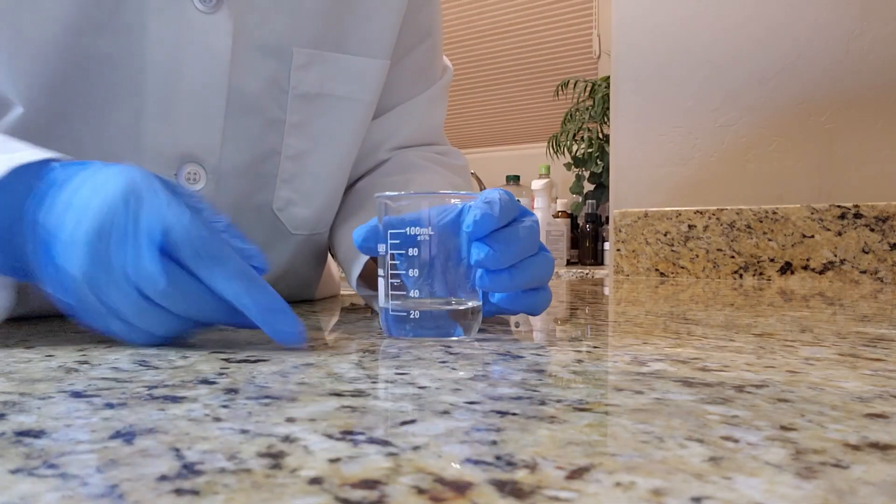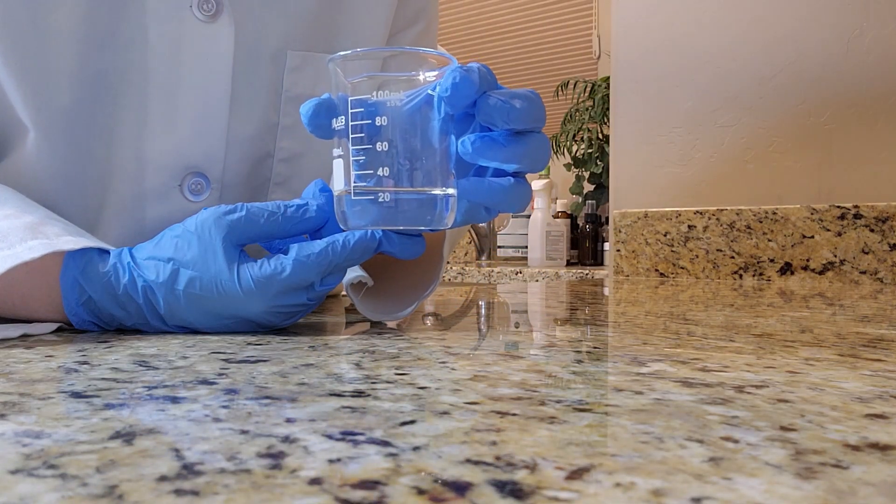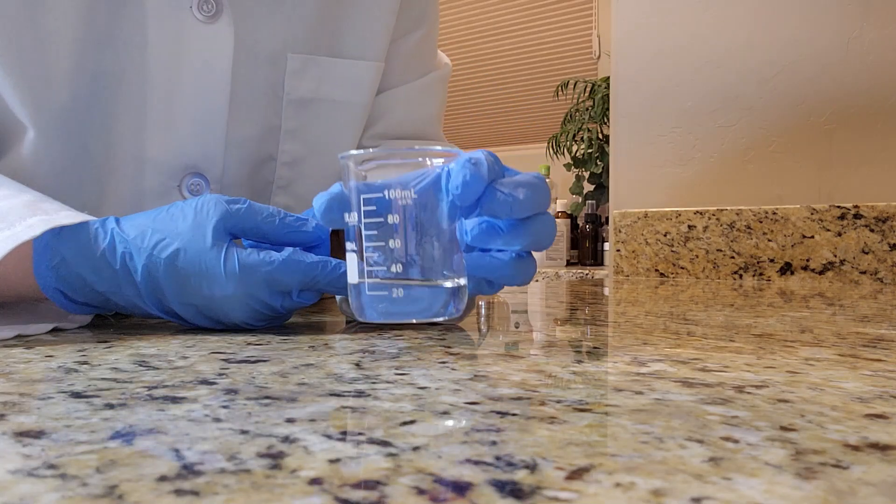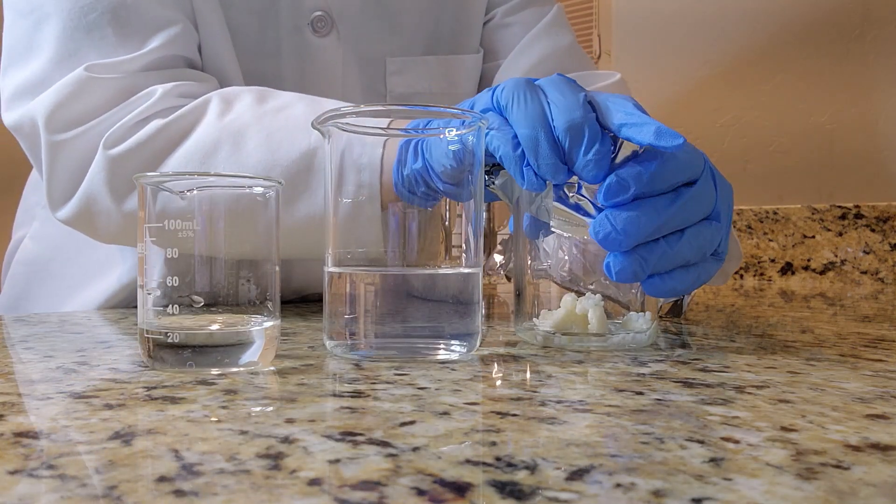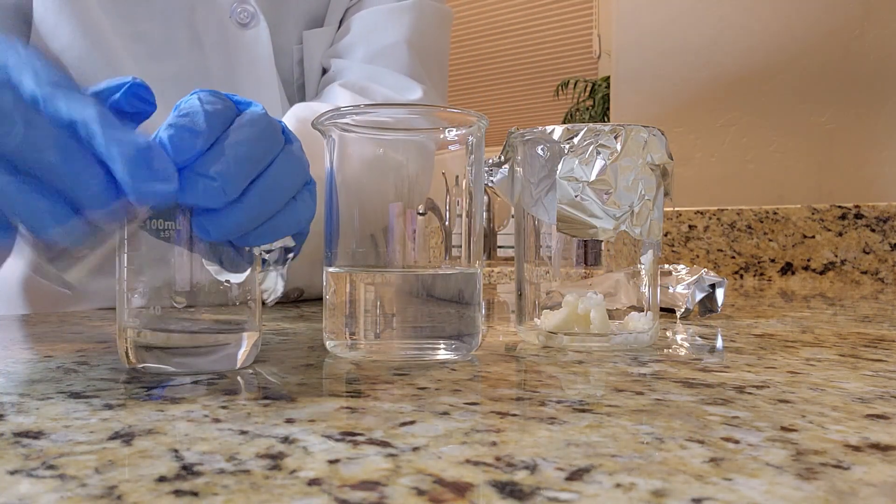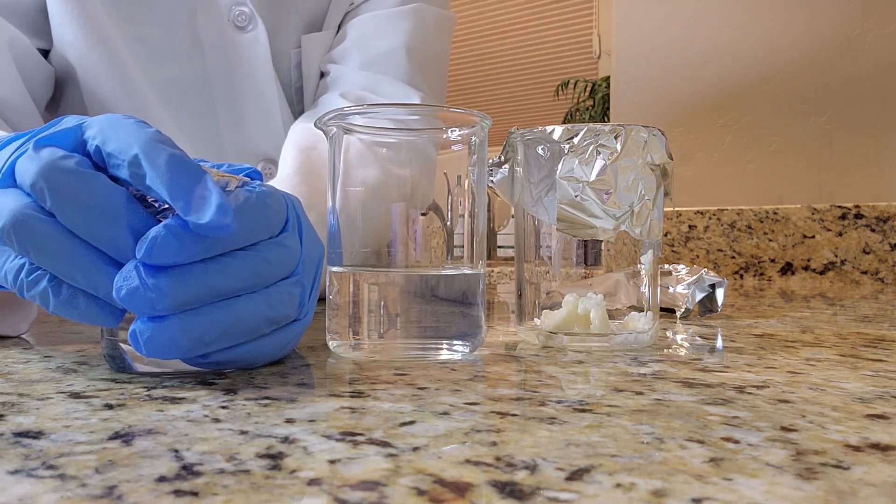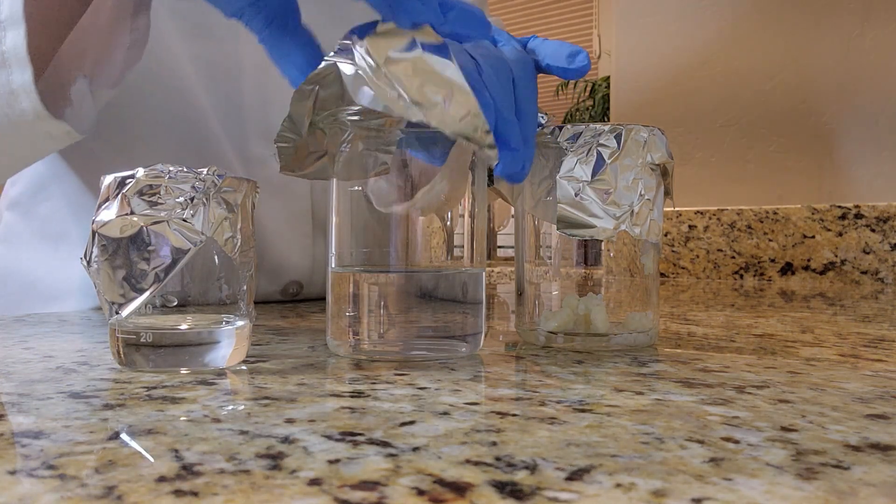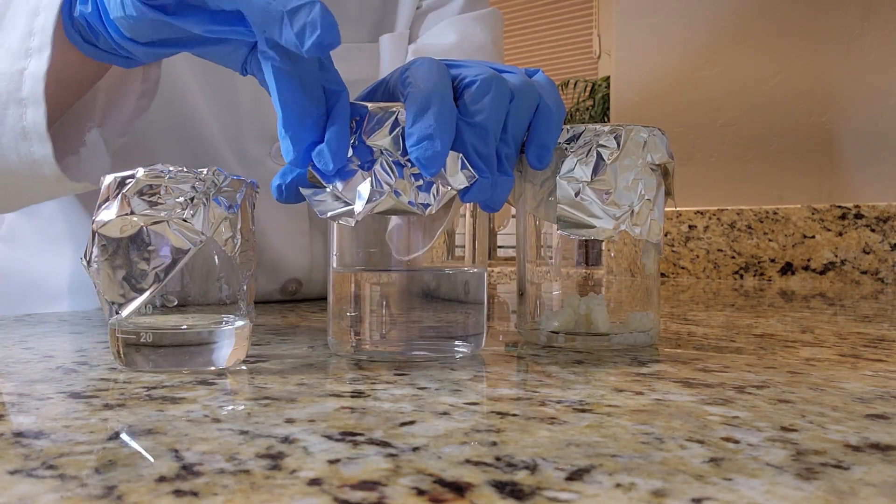So this next step is very important. What I've done is added some more distilled water to the beaker. Now that I've added that additional distilled water I'm going to cover all three of the beakers here and then I'm gently going to melt all the ingredients. I want to make sure that the butter and the wax that I added are completely melted.